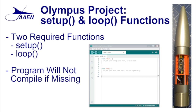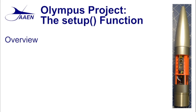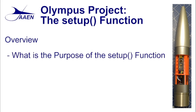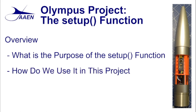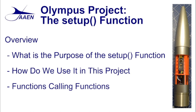The next thing we want to talk about is the setup function itself. We're going to cover several things: what's the purpose of the setup function, is it necessary, what should be included, how does it work, and how it's different from the loop function. Then we'll look at how we use it in our Olympus project, and finally we'll talk about what we call functions calling functions. Most everything in the Arduino is a function, so we'll have the setup function calling other functions.